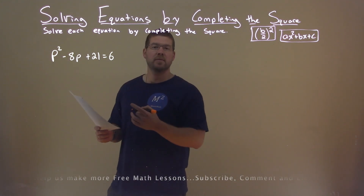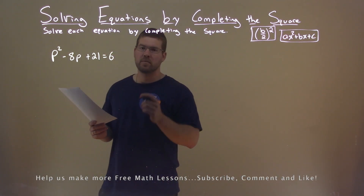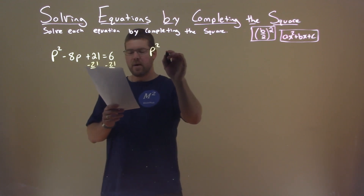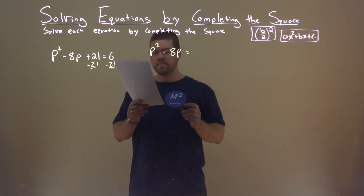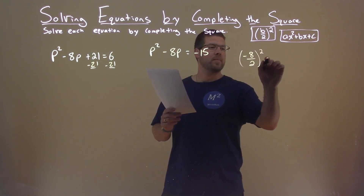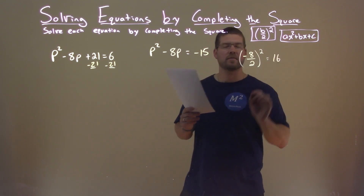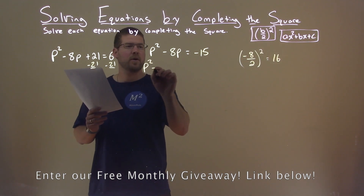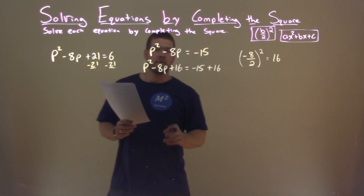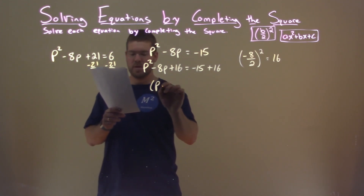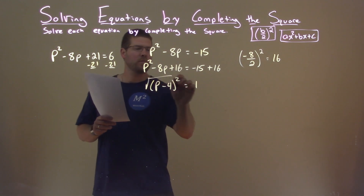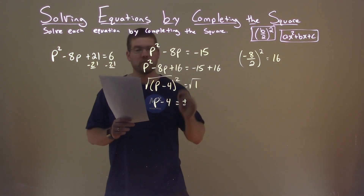We're given this problem right here: p squared minus 8p plus 21 equals 6, and we want to solve this by completing the square. First thing I'm going to do is subtract 21 from both sides, giving me p squared minus 8p equals 6 minus 21, which is negative 15. I look at my B value, negative 8. Dividing by 2 and squaring it: negative 8 divided by 2, squared, is positive 16. Adding 16 to both sides: p squared minus 8p plus 16 equals negative 15 plus 16. The left-hand side is a perfect square — p minus 4 squared — equals positive 1. Taking the square root of both sides: p minus 4 equals plus or minus 1.